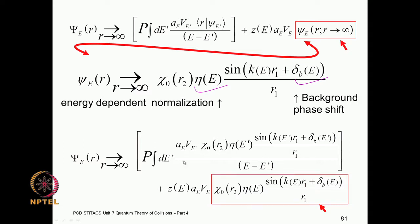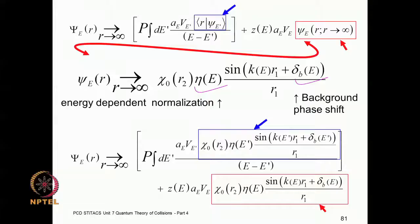This takes care of the configuration interaction, but now we have to deal only with the principal value of this integral. One can work out this principal value integration in detail, as would have been covered in mathematical physics courses. Rather than going through all the detailed mathematical steps, I will comment on the essential physics. Note that η(E) is an energy-dependent normalization — the same function of energy on both sides, just with different arguments.